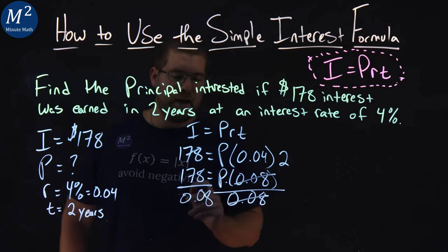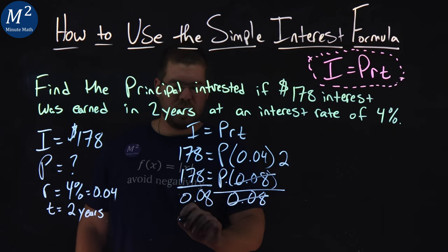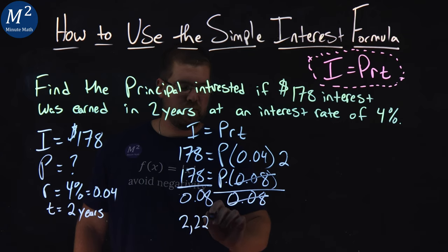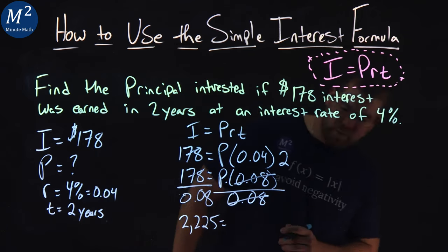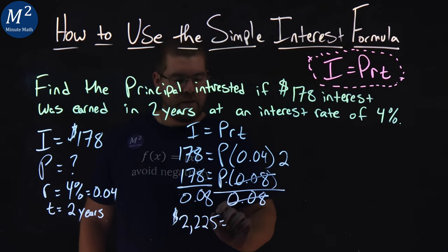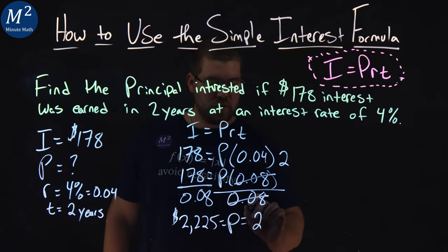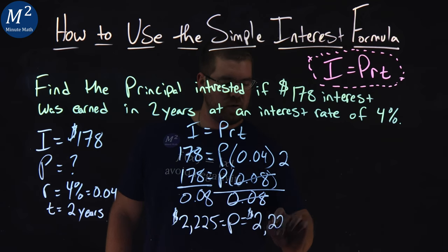And $178 divided by 0.08 is $2,225. Double check. Yep, we're good. That's our principal, so the initial amount invested is $2,225.